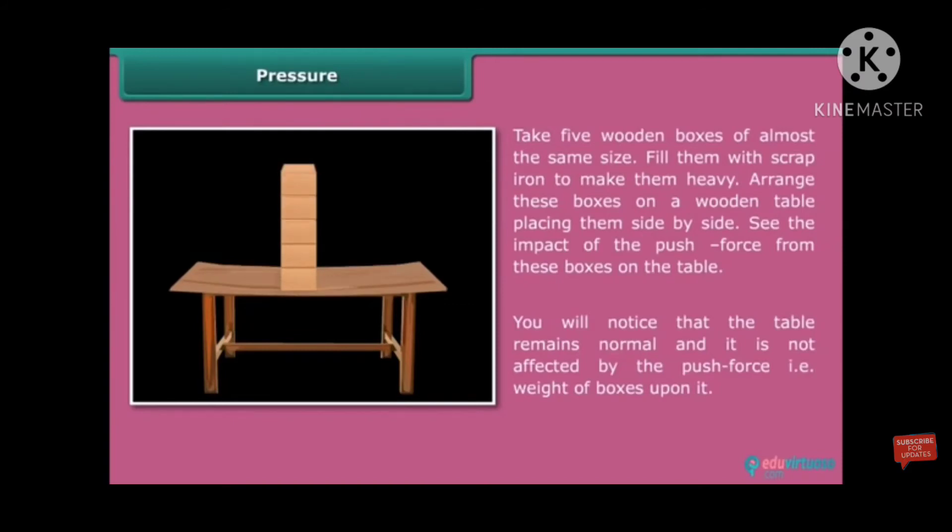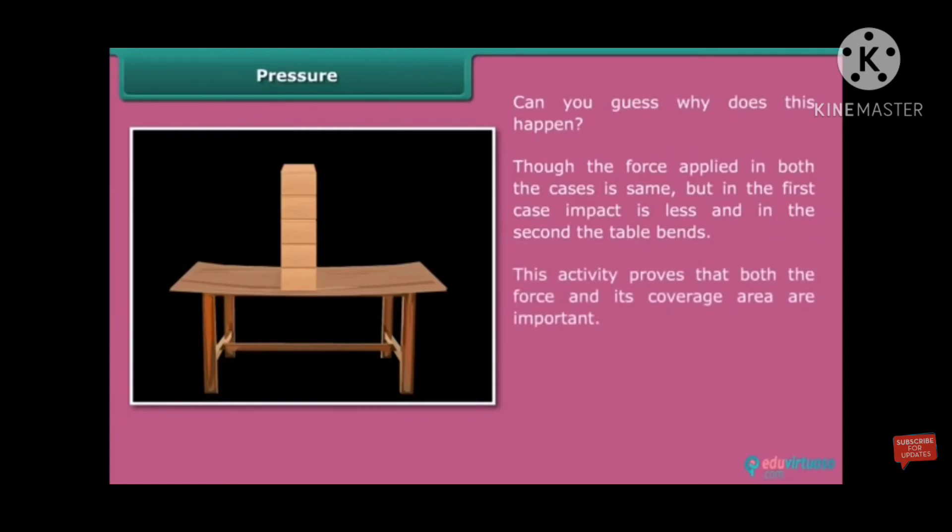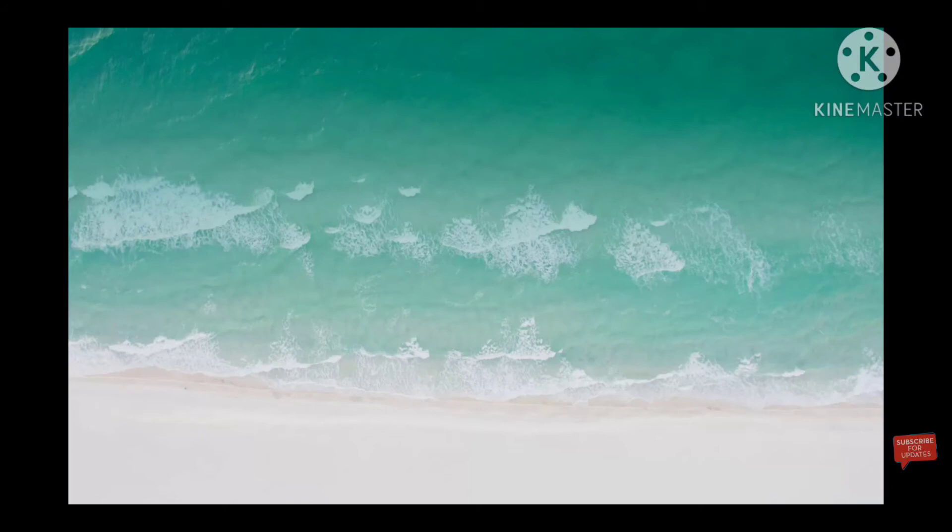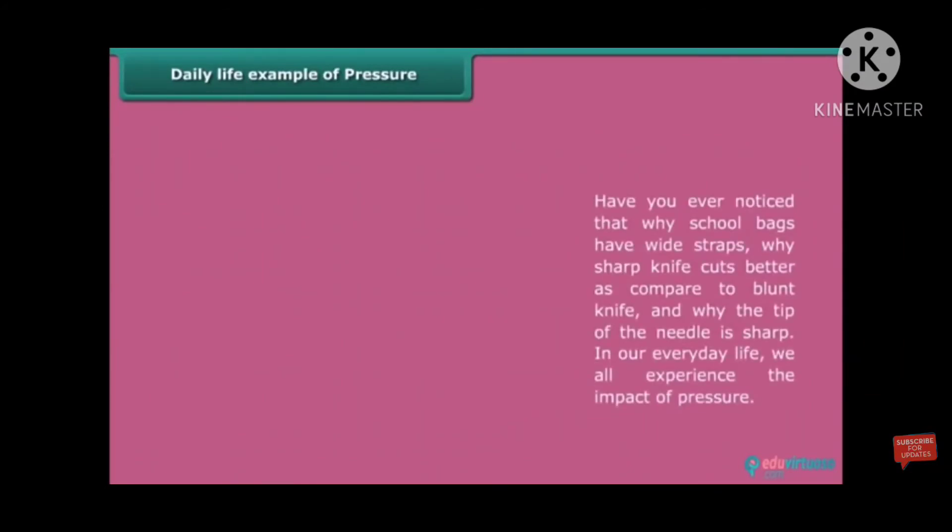But when you keep the box one upon another in a pile manner, what happens? Can you guess why does this happen? Just because, though the force applied in both the cases is same, in the first case, impact is less. And in the second case, the table bends. This activity proves that both the force and its coverage area are important. Smaller the area, the impact will be less. And greater the area, the impact is greater. And this phenomenon shows that pressure depends on weight of an object.